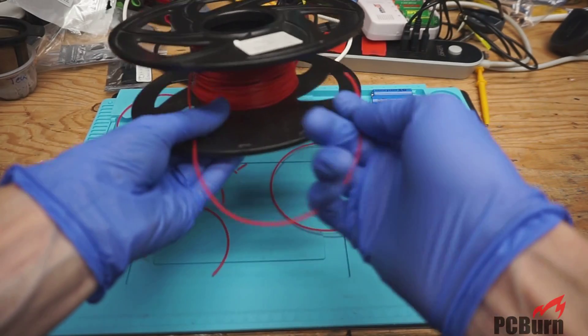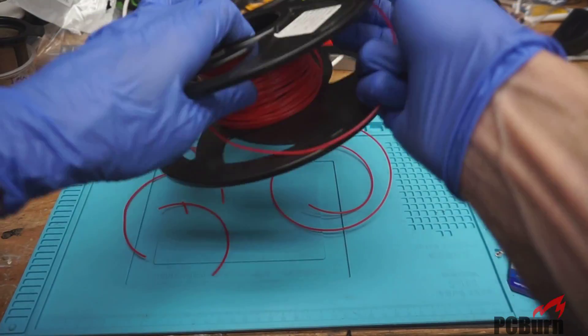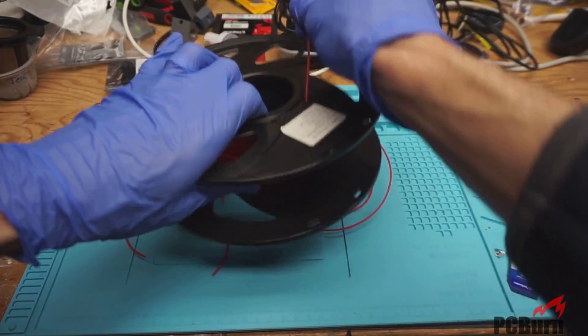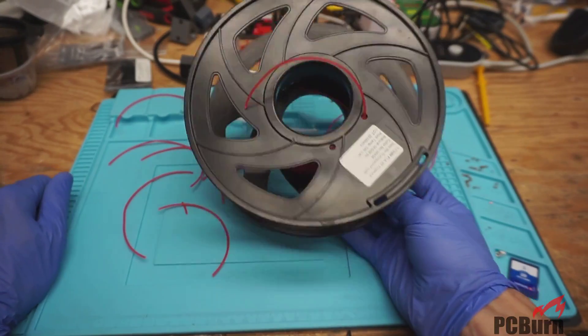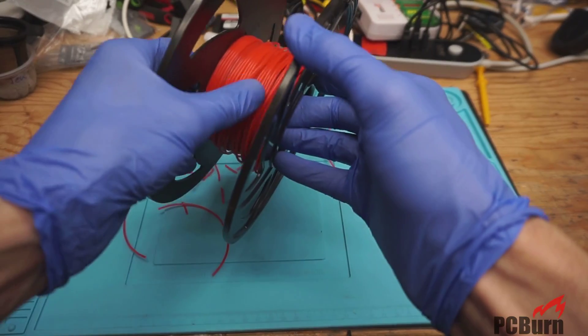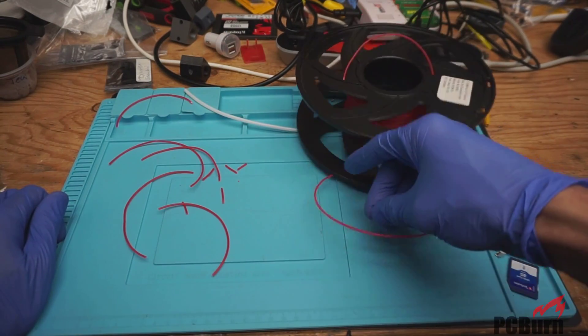So, the filament itself is just fine. It's only when I leave it sitting in the Bowden tube, straightened, that it comes up with a problem. And I'm fairly confident that it's because it's straightened, because it's being held out of its round, that it's snapping like that.